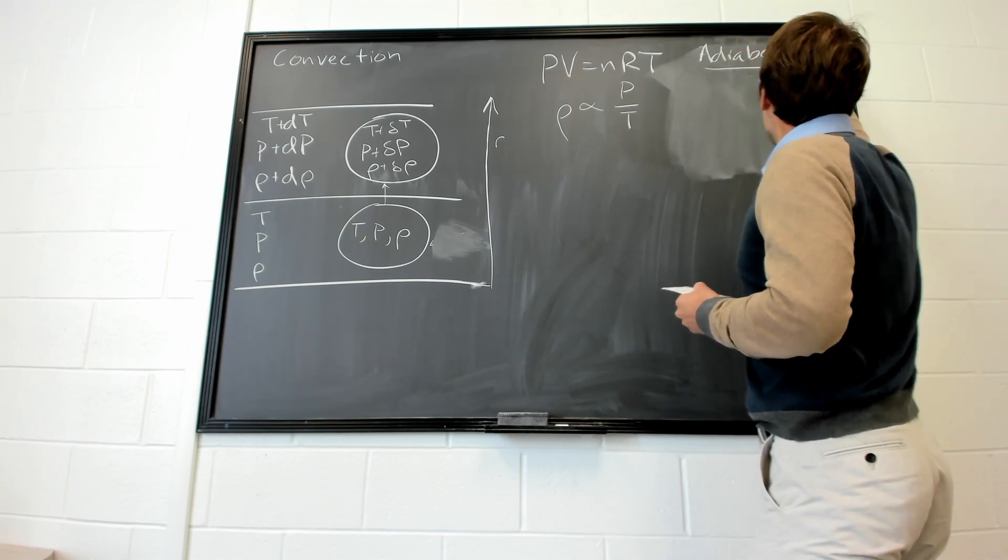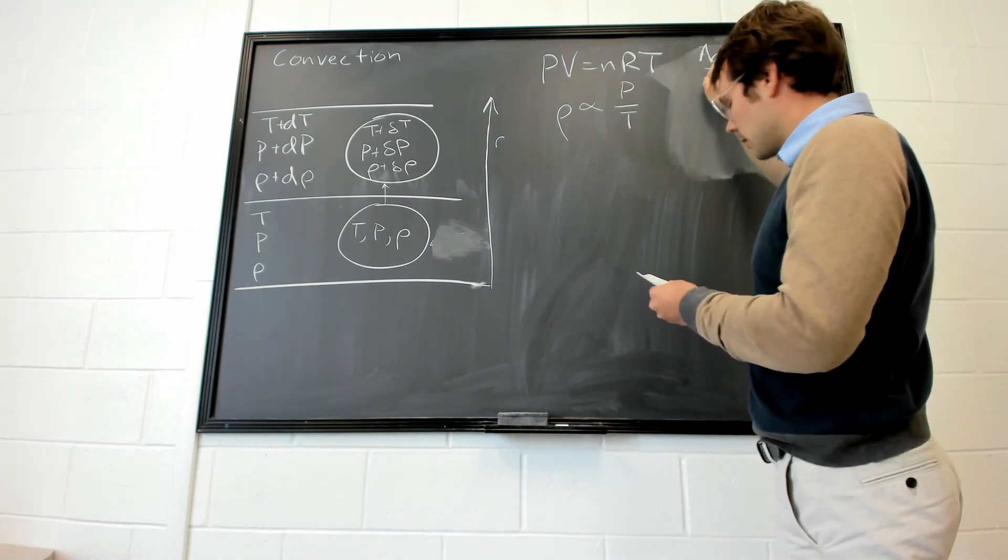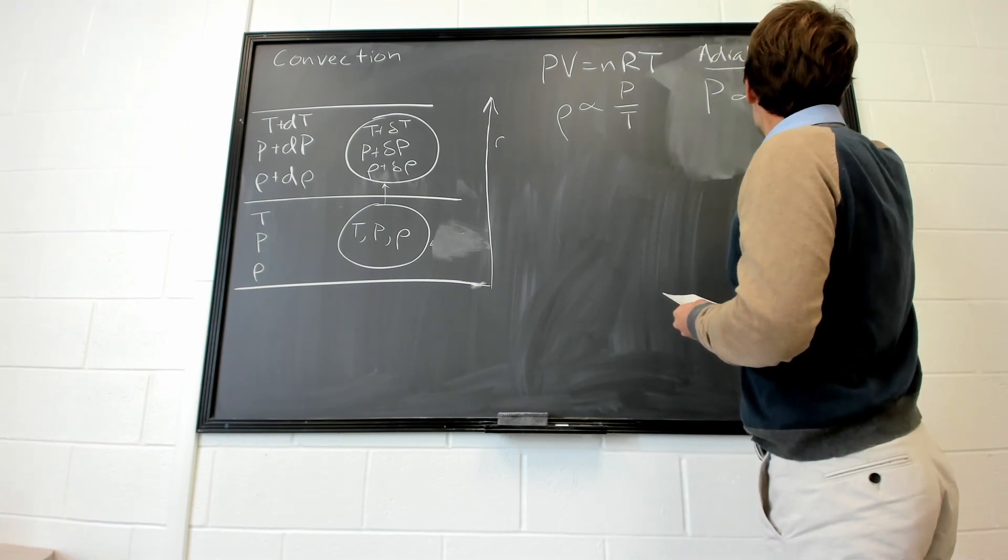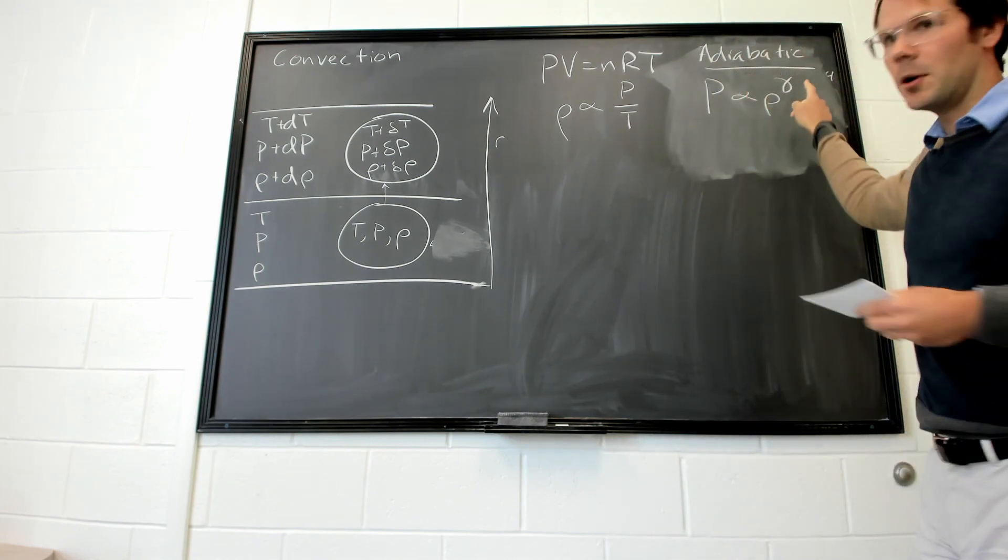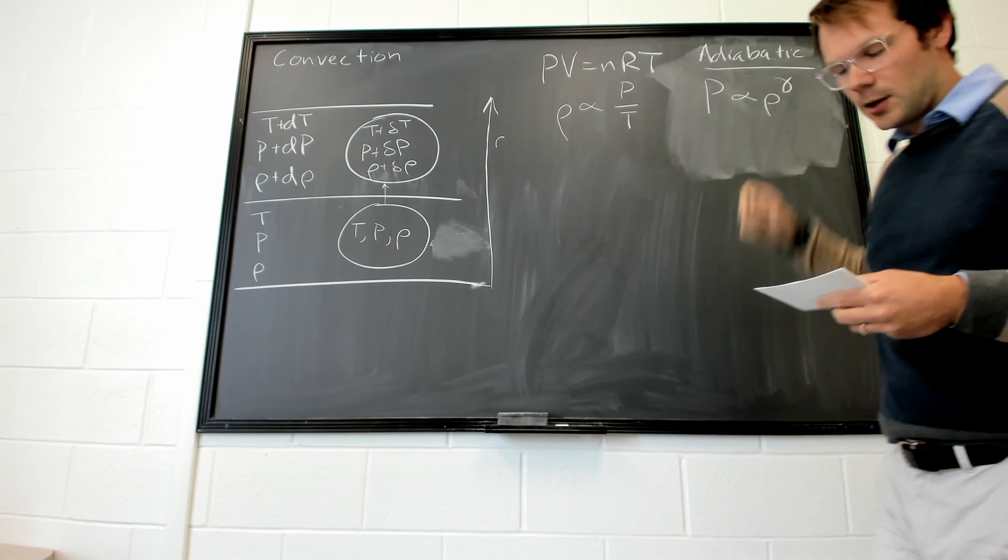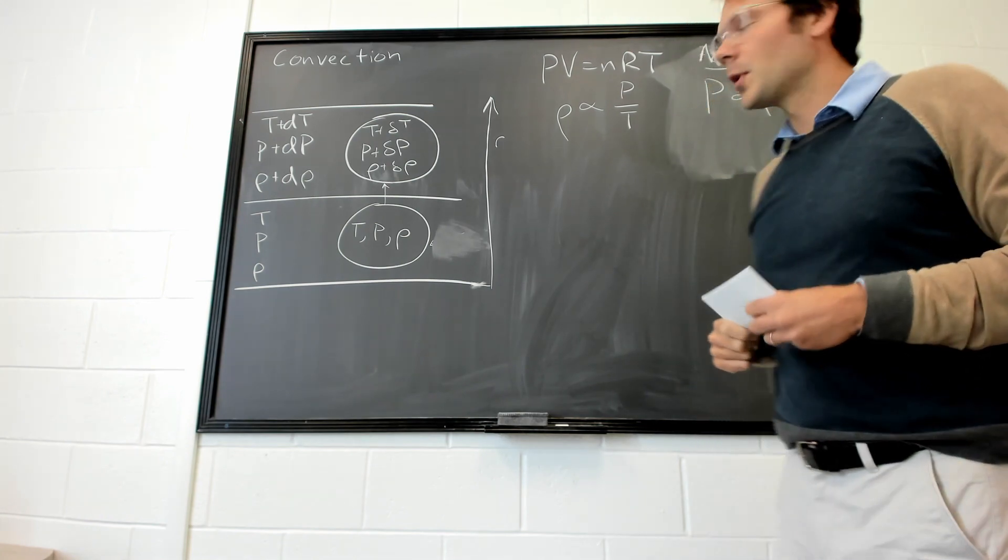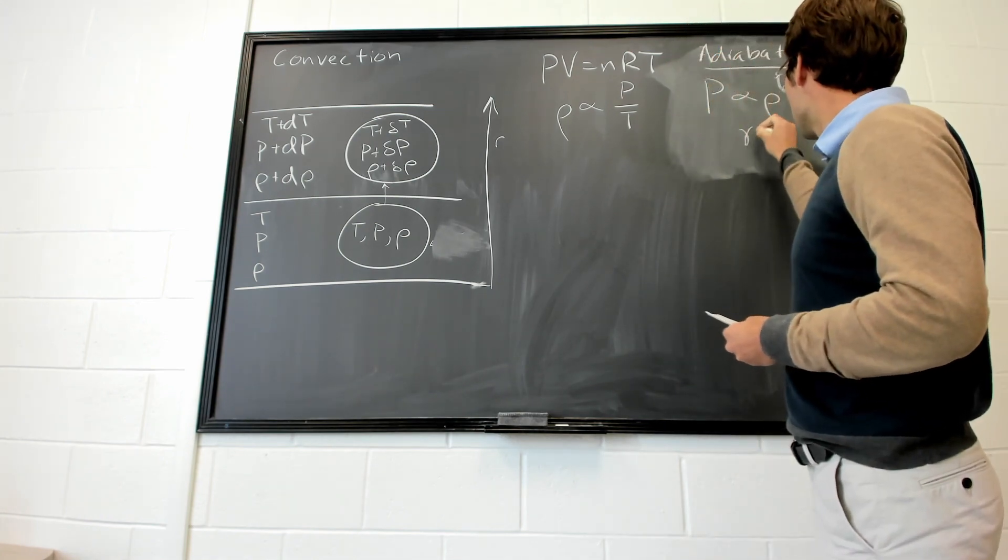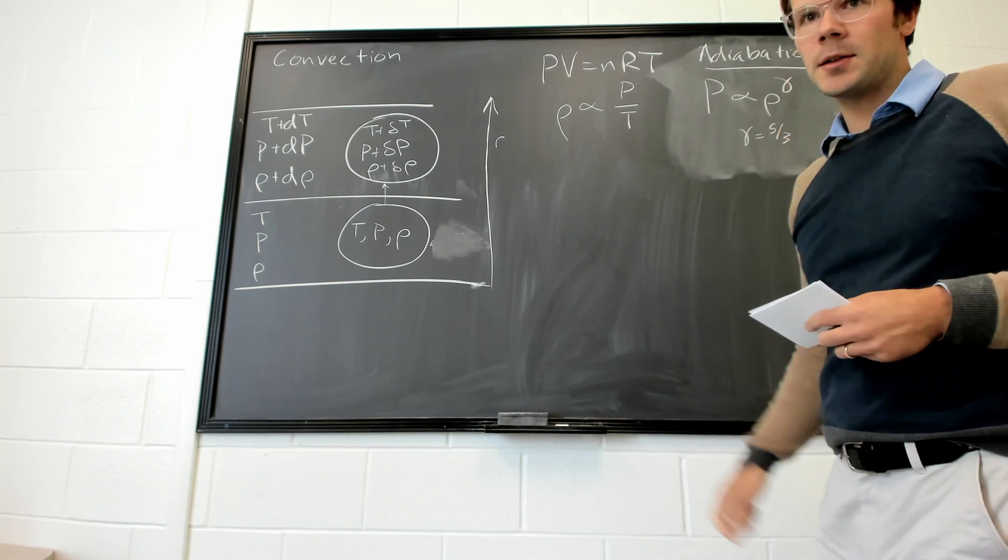And adiabatic transitions have the property that pressure is proportional to density to the gamma. And gamma is here, this is the adiabatic index.